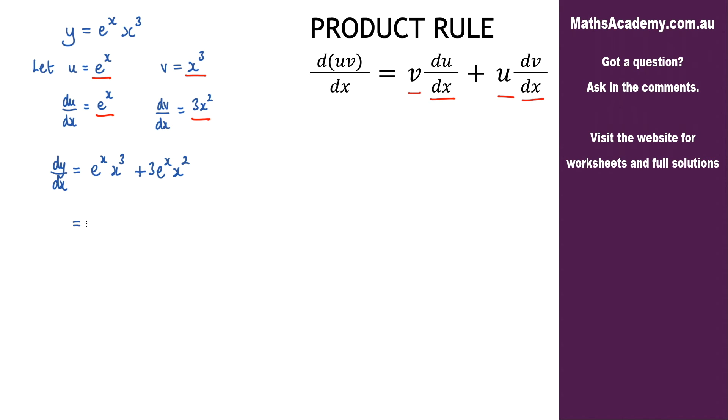Now there are some factors in here I can take out. Obviously we've got the e to the x. I also have an x squared, which will leave me with x plus 3.